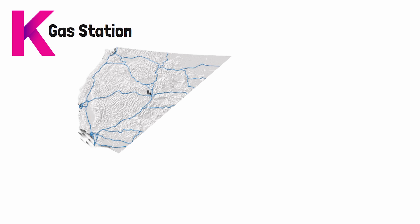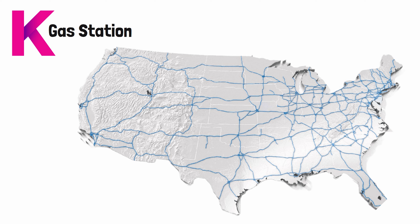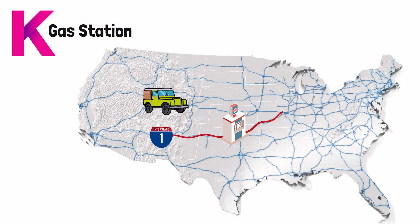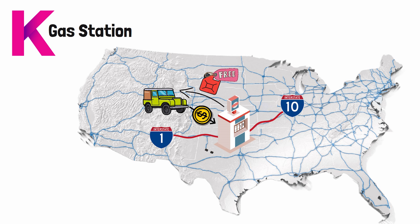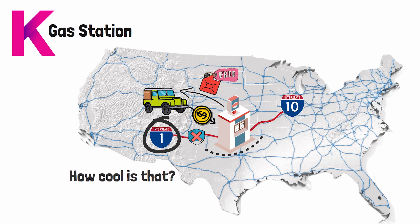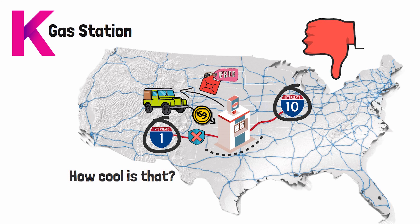In order to help you fully understand how gas stations work, I want you to imagine 20 different interstate highways all connected together. Each interstate is connected by a toll booth. So if you're driving a car and you wanted to go from interstate number one to interstate number ten, you would need to go through a toll booth. Now imagine instead of paying the toll booth worker, they gave you a full tank of gas for free every time you pass through.